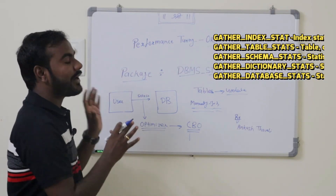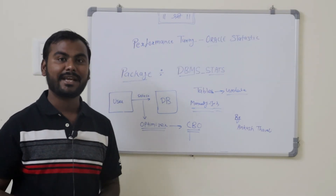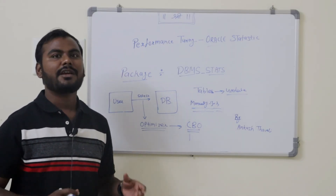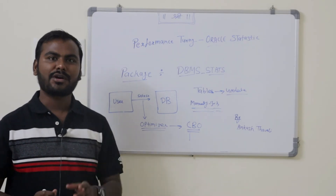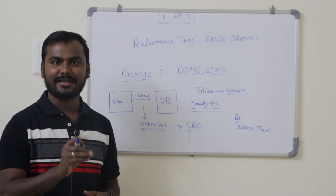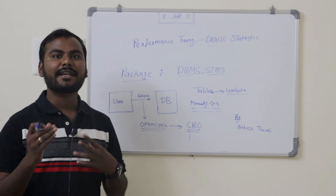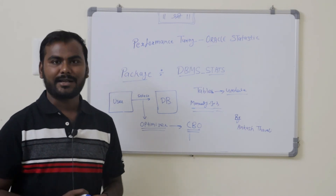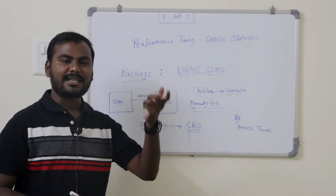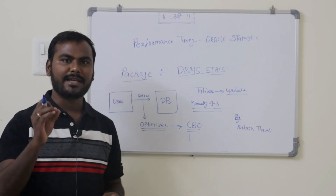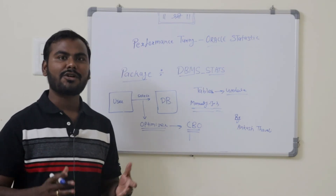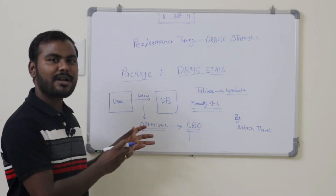So this is all about Oracle Statistics, and because of that, Oracle Statistics plays an important role whenever we are dealing with a performance tuning problem. If your statistics are up to date, you will see good performance on the table. But make sure you apply gather statistics only on tables that are not getting updated frequently. Whenever a SELECT query runs, the Oracle optimizer will use the statistics and create the best execution plan to execute that query. This is all about the performance tuning aspect of Oracle Statistics.